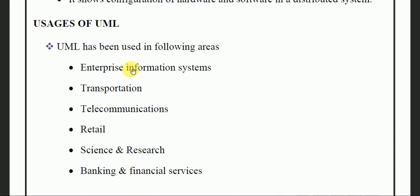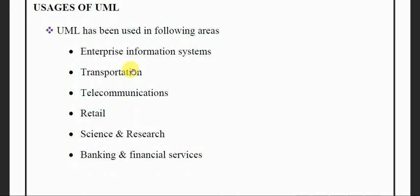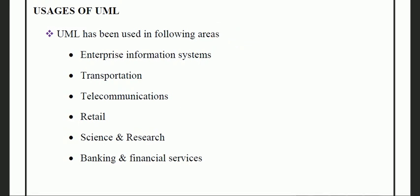Now let's look at the uses of UML — how do we use the UML diagram? UML has been used in the following areas: enterprise information systems, transportation, telecommunication, retail, science and research, and banking and financial systems. Whenever we are developing a system, we need these diagrams and represent the system with different types of UML diagrams.